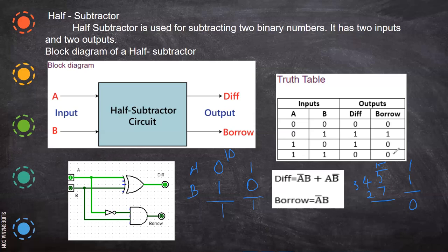Now looking at the truth table, we can derive the equations. For the difference output, ones appear in combinations A'B and AB', which is the XOR equation — odd number of ones gives output one. For the borrow output, the equation is A'B: A-bar times B, so one times zero is zero, one times one is one, zero times anything is zero.